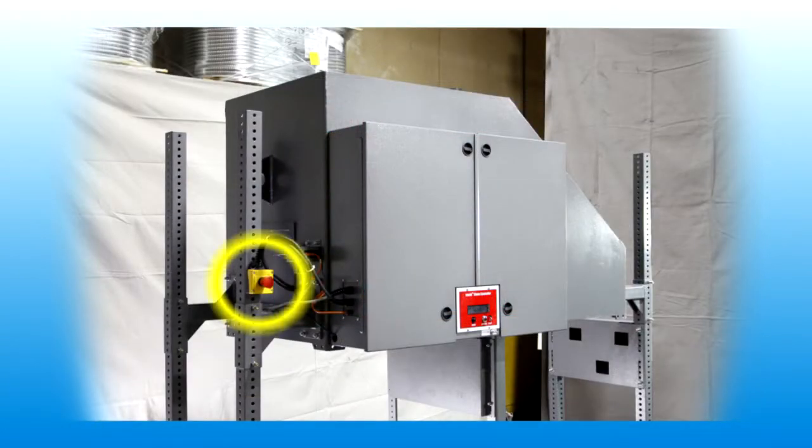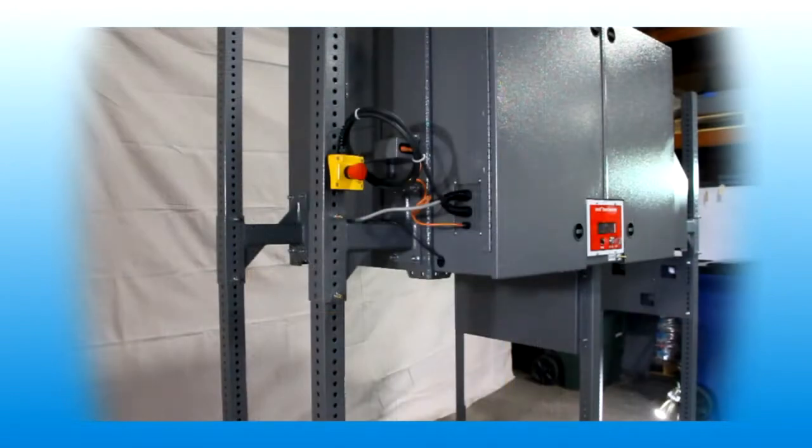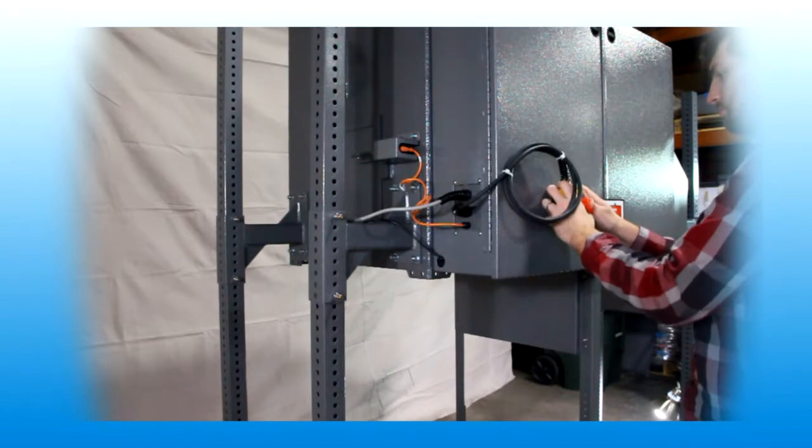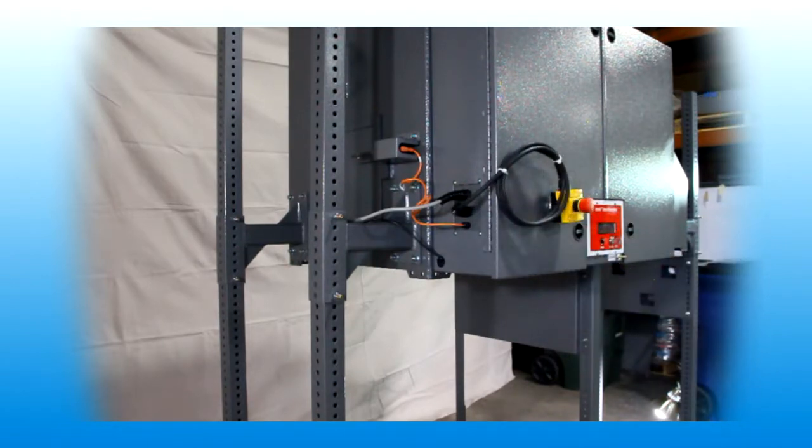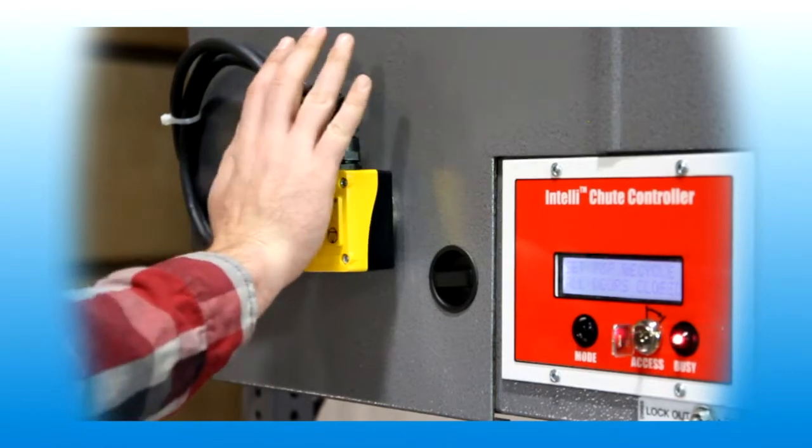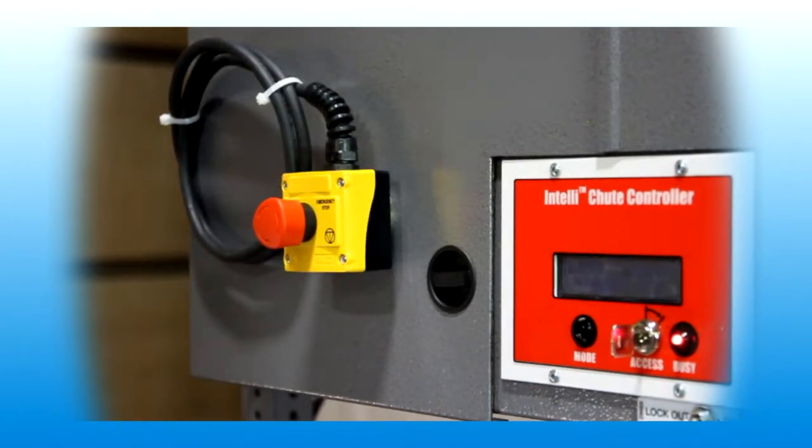An e-stop switch is wired into a separate enclosure with a magnetic base. It can be mounted in any suitable location for personnel to quickly activate the emergency shutdown. Pressing the switch will cut electrical feed from the Sorter to prevent the electric motor from operating. The switch is locked in the off position until it is released by twisting the switch button head.